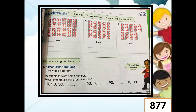Let's proceed to page 877. Same thing — count how many groups of ten, write the number, and the number name. Let's do number three: one, two, three, four, five, six, seven, eight, nine, ten, eleven, twelve. We have here twelve tens. To write the number, write twelve and add zero. That is one hundred twenty. Remember, in three-digit numbers, the first digit means hundreds. So that is one hundred twenty. Then write the number name for one hundred twenty.